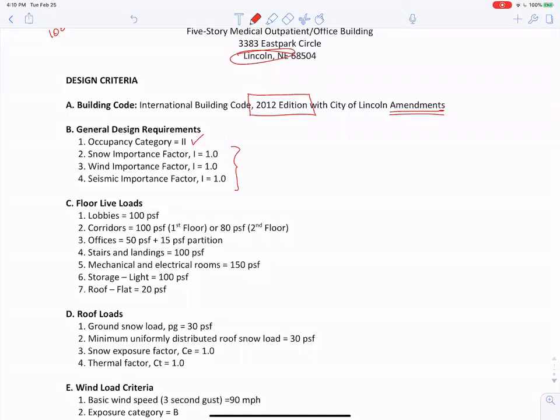Here are floor live loads. I came up with 100 PSF in the lobby. I decided that, I think I read somewhere in ASCE 7, that corridor on the first floor is 100 PSF, which doesn't matter because that's not a floor we're designing, that's on the ground. So 80 PSF. Offices I got were 50 PSF and 15 PSF partition.